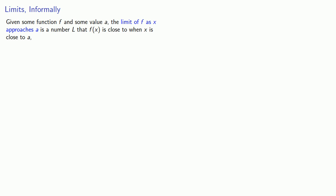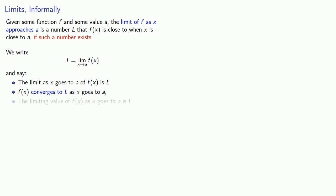Now there's an important qualifier here. This number might not exist, so we have to add if such a number exists. We write this as L equals the limit x to a f(x), and we read this as the limit as x goes to a of f(x) is L, or f(x) converges to L as x goes to a, or the limiting value of f(x) as x goes to a is L.